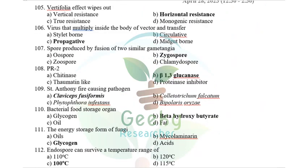Vertifolia effect: loss of horizontal resistance during breeding for vertical resistance is called the vertifolia effect. They asked what is wiped out — horizontal resistance is wiped out because we are breeding for vertical resistance.